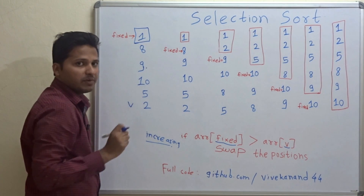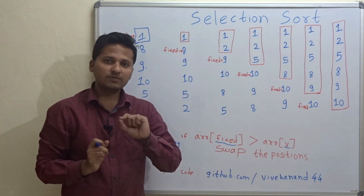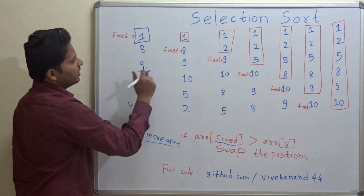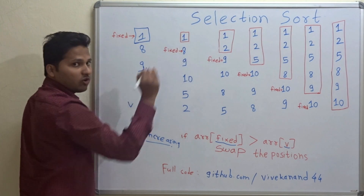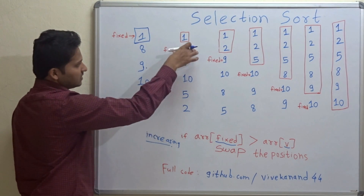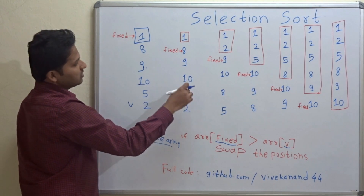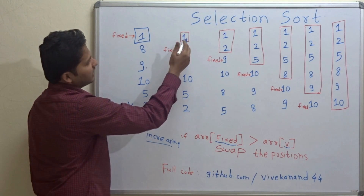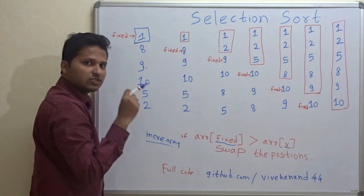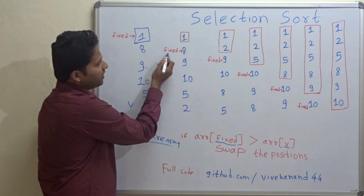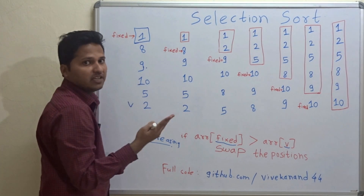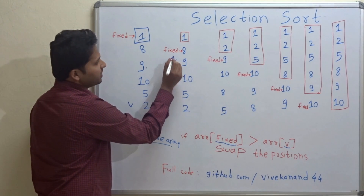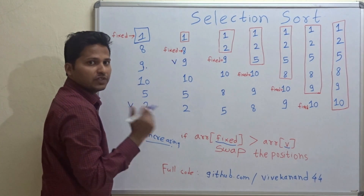Whenever the first pass ends, the least element in the array always comes to the top. So 1, being the least element, comes at the top. These are the 5 remaining elements we have to sort. In the next pass, since the first position is sorted, the fixed pointer points to the second position and the variable pointer points to the next position of the fixed pointer.